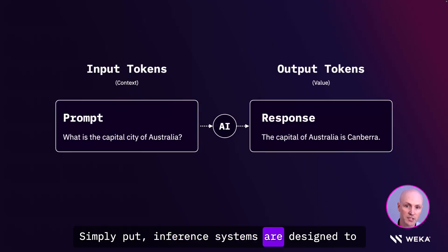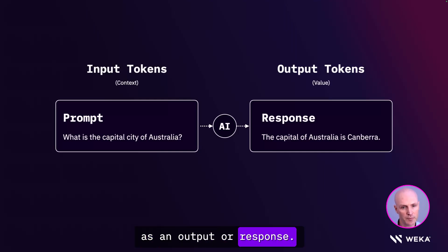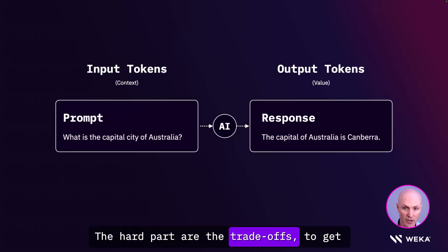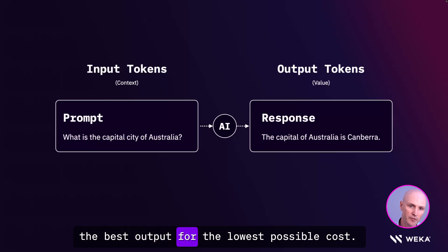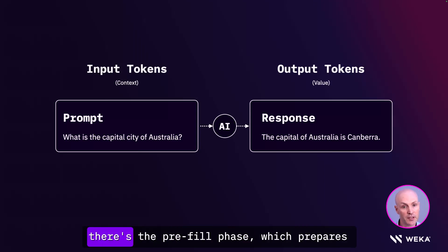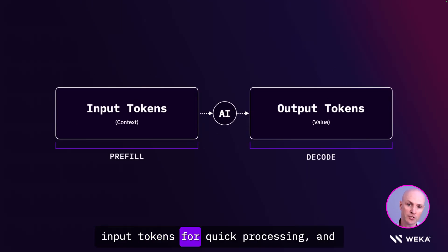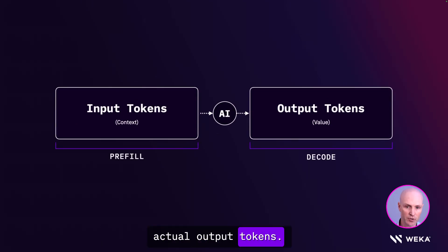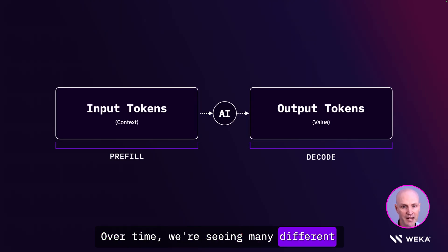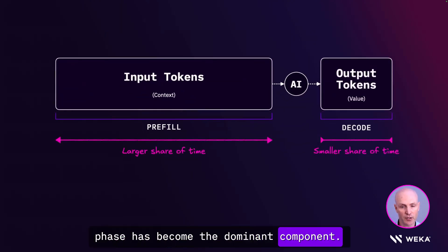Simply put, inference systems are designed to receive context as an input and return value as an output or response. The hard part are the tradeoffs to get the best output for the lowest possible cost. There are two phases to produce that value: there's the pre-fill phase, which prepares input tokens for quick processing, and the decode phase, which produces the actual output tokens. Over time, we're seeing many different inference use cases where the pre-fill phase has become the dominant component.